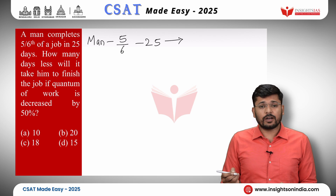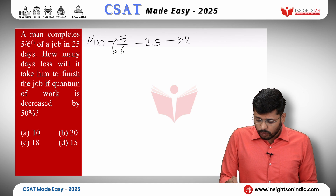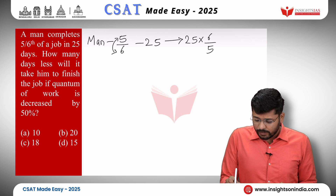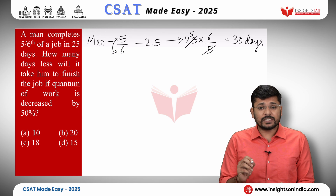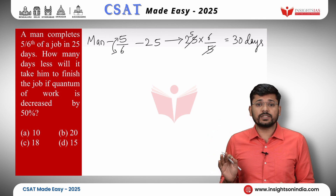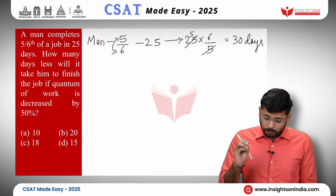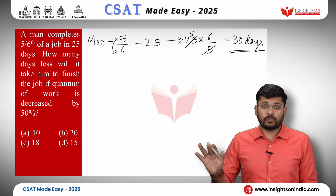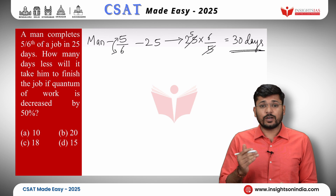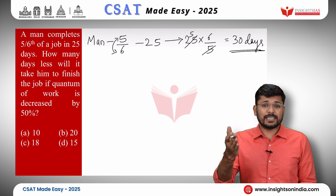To find how much time he takes to finish the whole work, we inverse the fraction 5/6 and multiply by 25. That gives 25 multiplied by 6/5. Since 5 divides 25, we get 5, and 5 times 6 is 30 days. So the man will finish the whole work in 30 days. Now the quantum of work is decreased by 50%, meaning it has been halved.